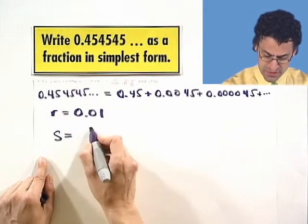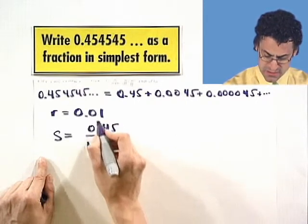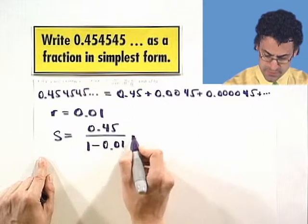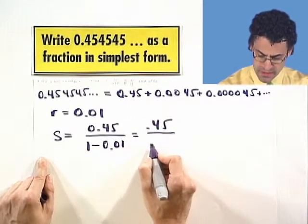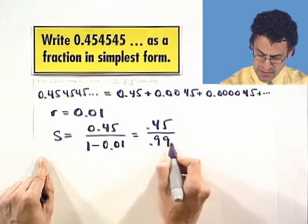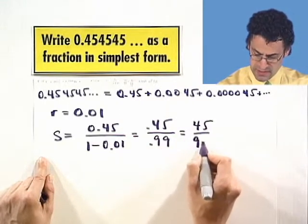0.45 divided by 1 minus the ratio, 0.01. Well, that equals 0.45 divided by 0.99, which equals 45 over 99.